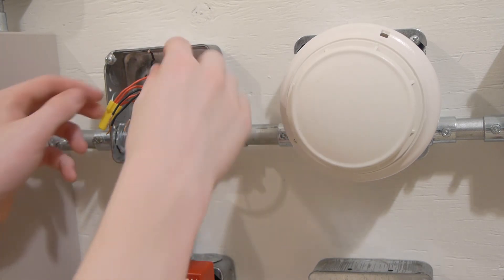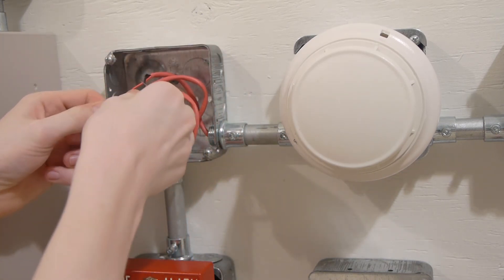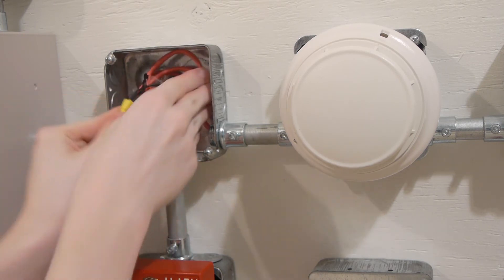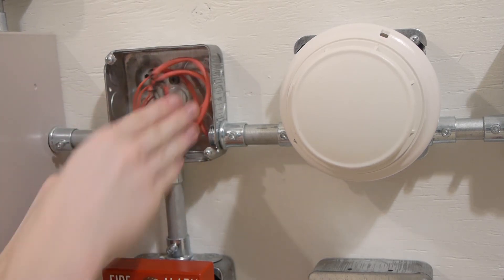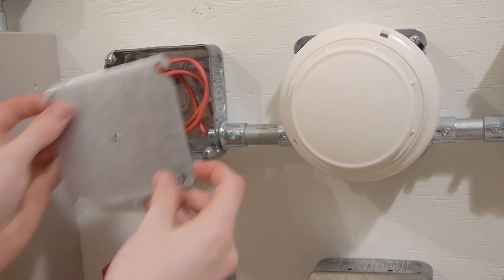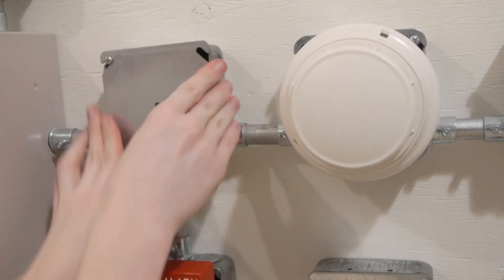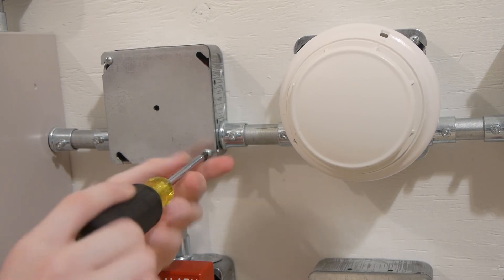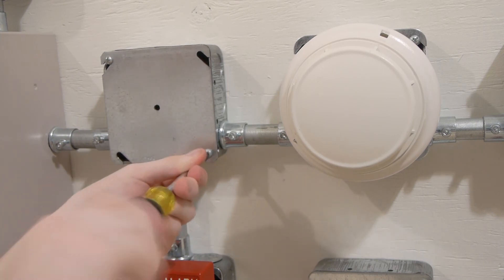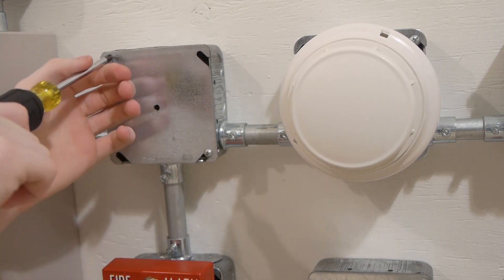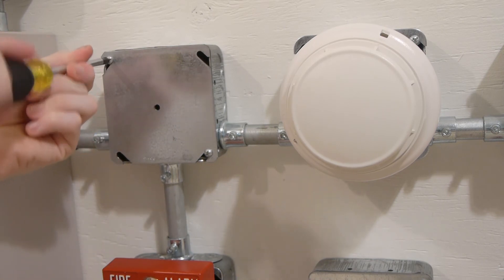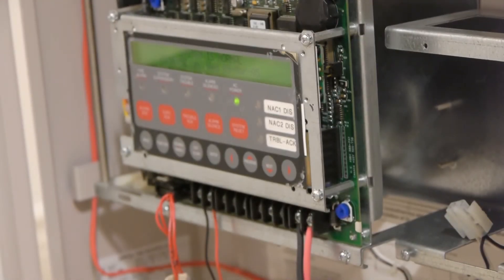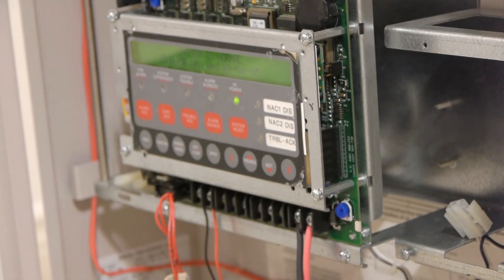Now keep in mind there might be multiple ground faults on the system, especially if it's a large system. So I can go ahead and put that back in the box and put the cover back on, tighten it down. If we go back to the panel, as you can see there are no troubles, which means we have fixed the ground fault.